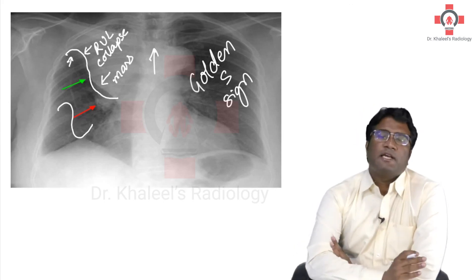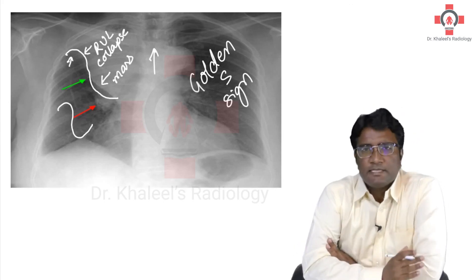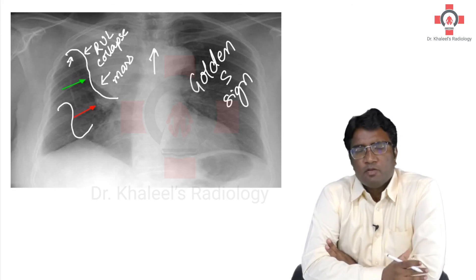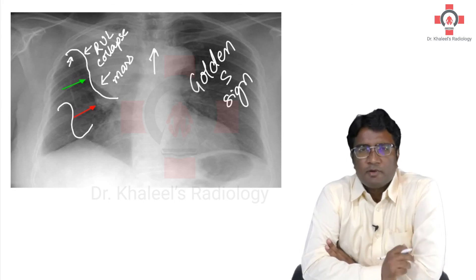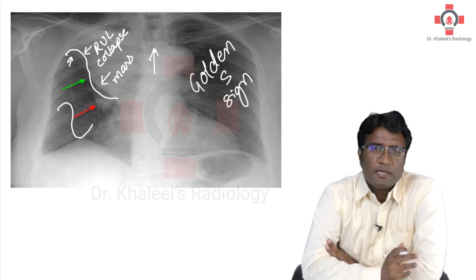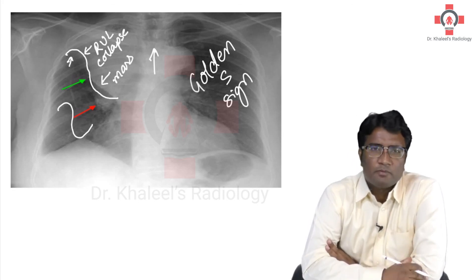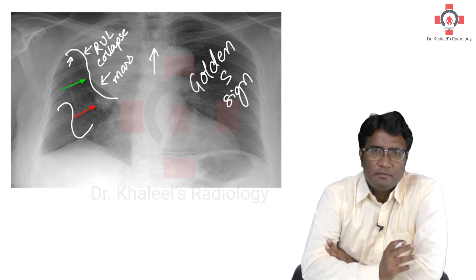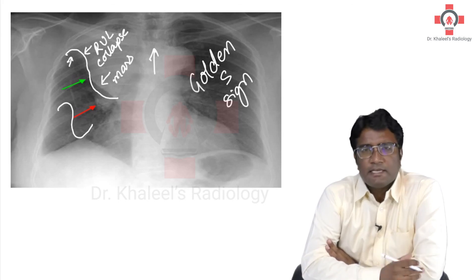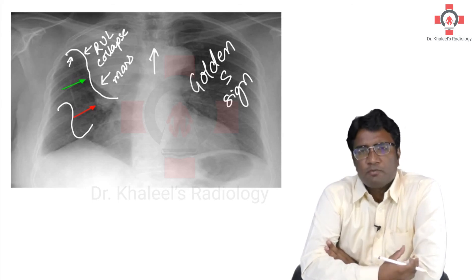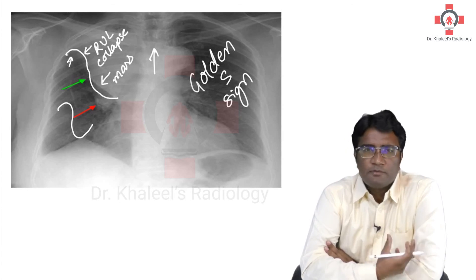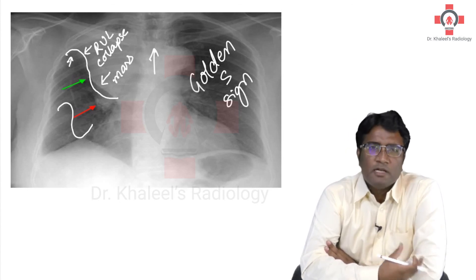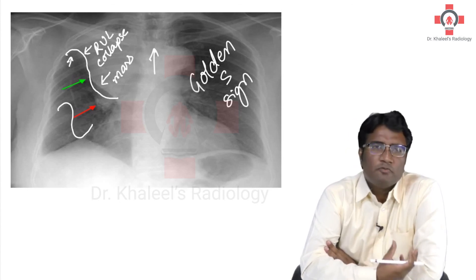In one exam, they asked: Golden S sign is seen in — right upper lobe collapse, right middle lobe collapse, right lower lobe collapse, left upper lobe collapse, or left lower lobe collapse? The answer was right upper lobe collapse. But if they ask you and the options include right upper lobe collapse, right middle lobe collapse, lower lobe collapse, and bronchogenic carcinoma — please go for bronchogenic carcinoma.